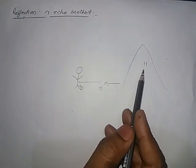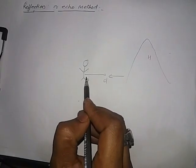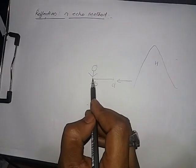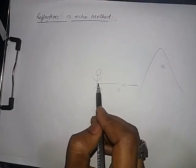Consider this is a hill and here I have the observer. We want to measure the distance between observer and the hill.